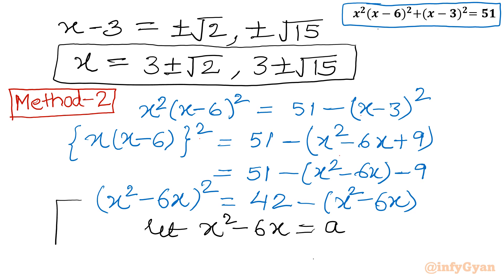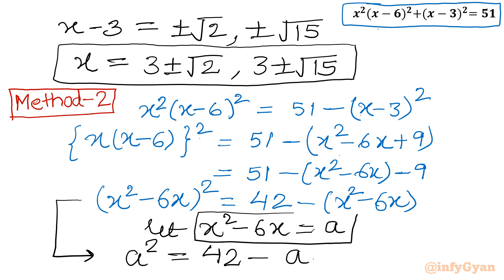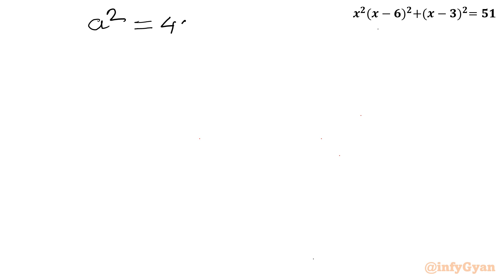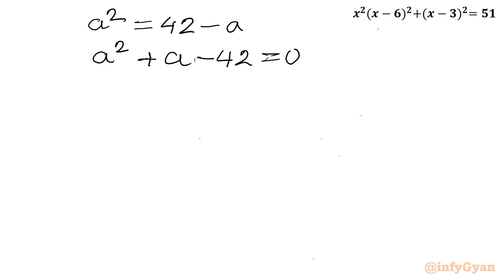So this equation will become a quadratic in a. I will write a² equals 42 minus a. Rearranging: a² plus a minus 42 equals 0. Remember our substitution is x² minus 6x equals a.